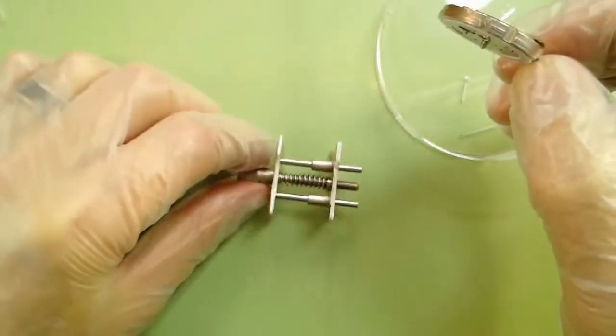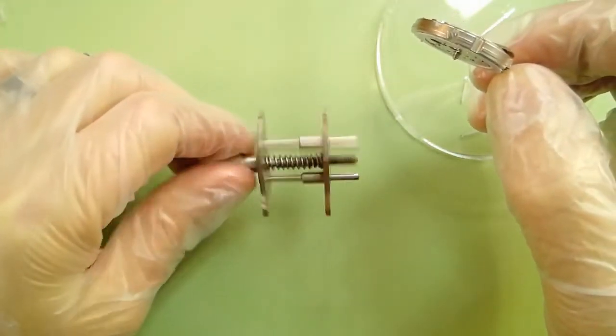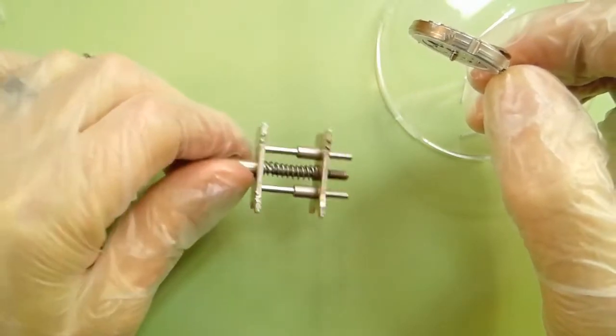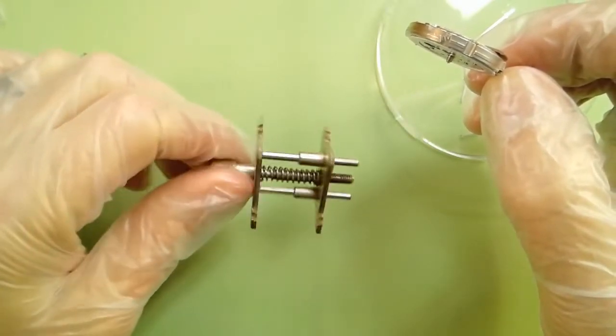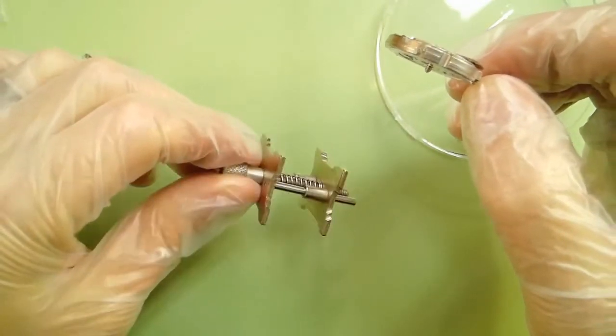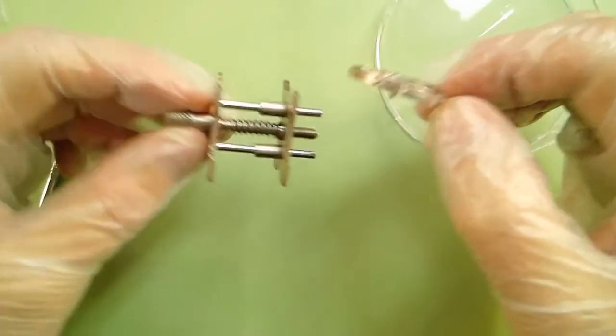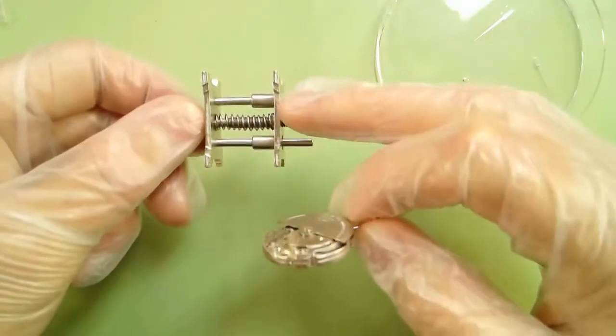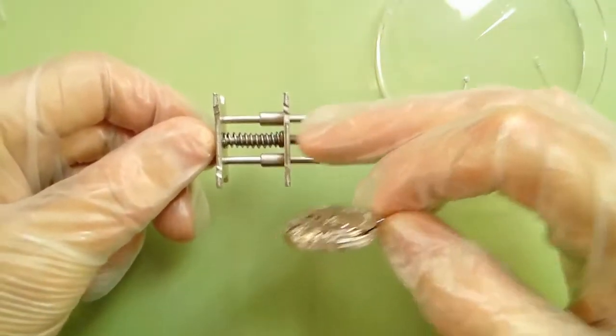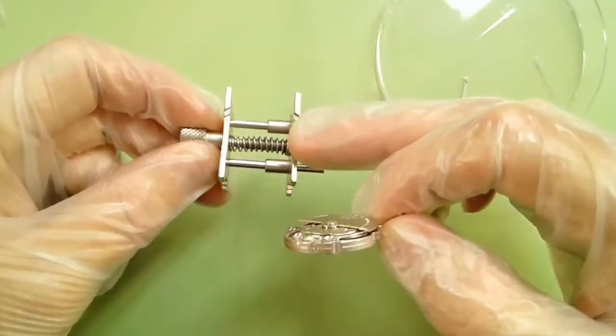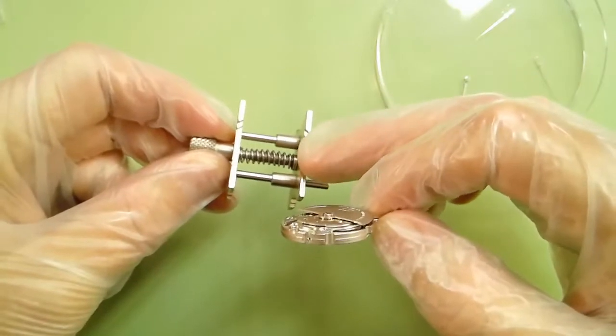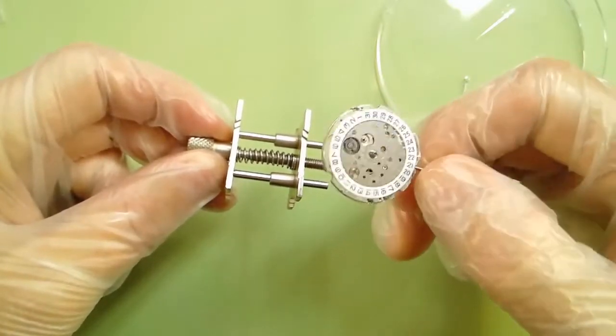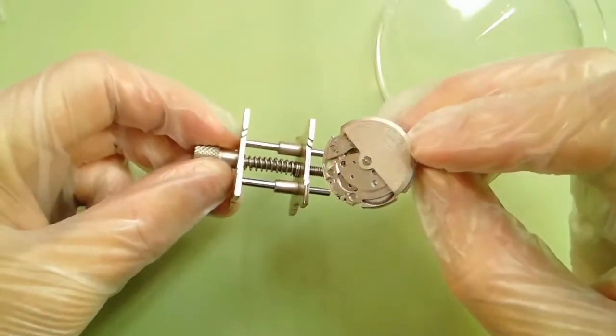Now you're going to need your movement holder that is included with the Esslinger Toolkit. It is an eight-in-one movement holder. It holds a bunch of different sized movements. I've found that there's this large cutout side and then on the very opposite, there's this medium cutout. And that's where you're going to want to set the movement into for removing the rotor.